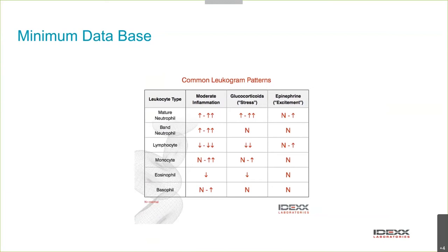An inflammatory leukogram — importantly, not every one has a high white cell count or high neutrophil count. You can have a significant inflammatory leukogram with a normal white cell count, because that count is a balance of production and consumption — if white cells are used up as quickly as produced, the count may stay normal. If you've got band neutrophils, regardless of the white cell count, that tells you there's an inflammatory response. A stress leukogram and inflammatory leukogram can coexist — they're not mutually exclusive.